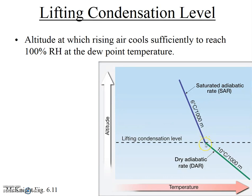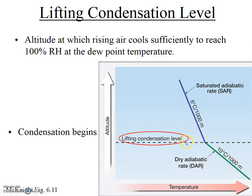Something happens. Eventually, as the air rises, expands, and cools, it gets cool enough that it reaches the dew point temperature. Basically, the temperature goes down enough that the relative humidity is going up, and eventually the relative humidity hits 100%. We call that level the lifting condensation level. And at that point — at that temperature, at that elevation — condensation begins and clouds form.